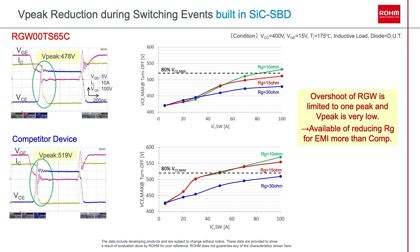Overshoot in Roam's hybrid IGBTs is designed to limit the peaks, resulting in a significantly lower VPEAK value. When testing other vendors' hybrid IGBTs, we measured a VPEAK of 519 volts, while Roam's hybrid IGBTs feature a low VPEAK of 478 volts. This is due to the technology for both the IGBT and the SiC SBD, for which Roam has industry-leading technology. It is also important to note that you can use a variety of external gate resistors with Roam's hybrid IGBTs, whereas other vendors' devices might not have that same flexibility.